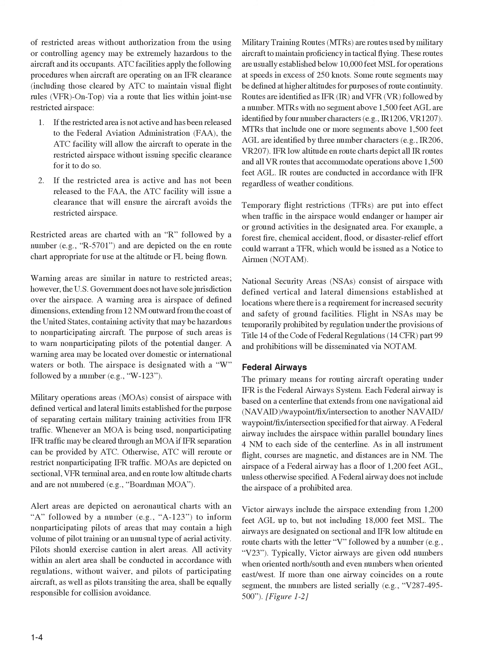Alert areas are depicted on aeronautical charts with an A followed by a number, for example A123, to inform non-participating pilots of areas that may contain a high volume of pilot training or an unusual type of aerial activity. Pilots should exercise caution in alert areas. All activity within an alert area shall be conducted in accordance with regulations, without waiver, and pilots of participating aircraft, as well as pilots transiting the area, shall be equally responsible for collision avoidance. Military Training Routes, MTRs, are routes used by military aircraft to maintain proficiency in tactical flying.